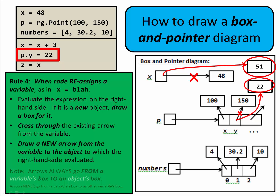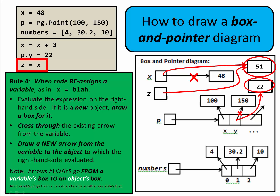It's important to note that arrows always go from a variable's box to an object's box. For example, when executing the last line z = x, we evaluate the right-hand side x, which evaluates to 51. Then on the left-hand side, since z is a new variable, we make a box, put z beside it, and draw an arrow from the box to the object 51. Never have an arrow go from a variable's box to another variable's box.